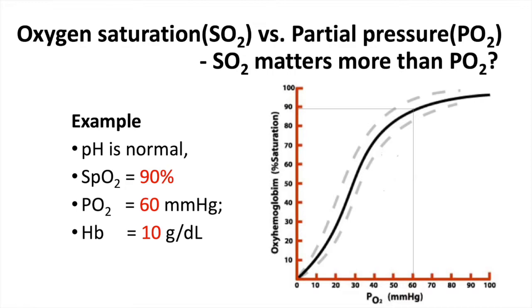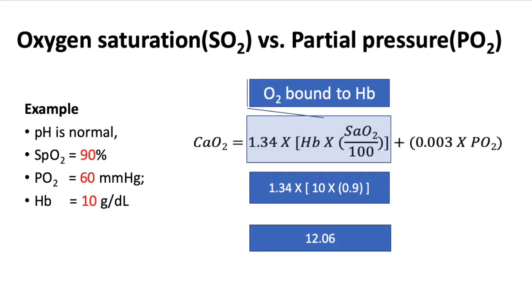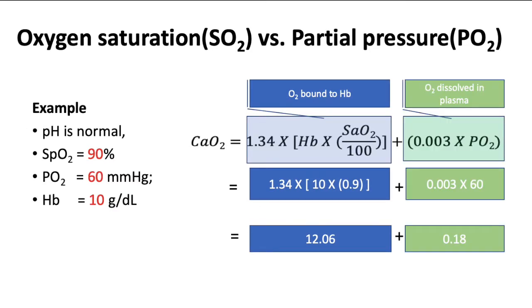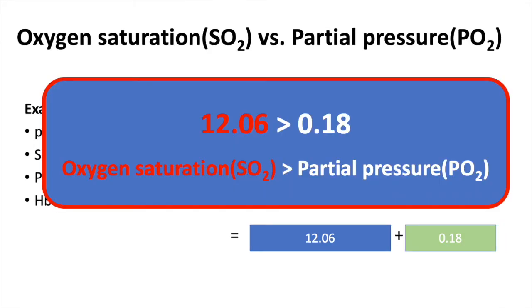Why does the oxygen saturation matter more than the oxygen partial pressure? According to the oxygen-hemoglobin dissociation curve, if the pH is normal and the SpO2 is 90%, the partial pressure of oxygen is 60. Taking a hypothetical case of a patient with a hemoglobin of 10 g per deciliter, the bound oxygen equals 1.34 times 10 times 0.9, which is 12.06. Conversely, the dissolved amount is only 0.003 times 60, which is only 0.18. So 0.18 is negligible compared to 12.06. Therefore, at atmospheric pressure, the oxygen saturation matters much more than the oxygen partial pressure.